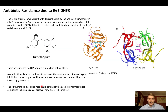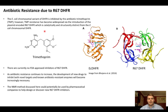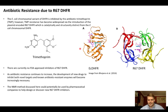A key enzyme in this pathway is dihydrofolate reductase. It catalyzes the reduction of dihydrofolate to tetrahydrofolate. The E. coli chromosomal variant of this enzyme is inhibited by an antibiotic called trimethoprim. The problem is trimethoprim resistance has become very widespread, due to the introduction of a plasmid-encoded R67 dihydrofolate reductase, which is structurally and catalytically distinct from the chromosomal dihydrofolate reductase.